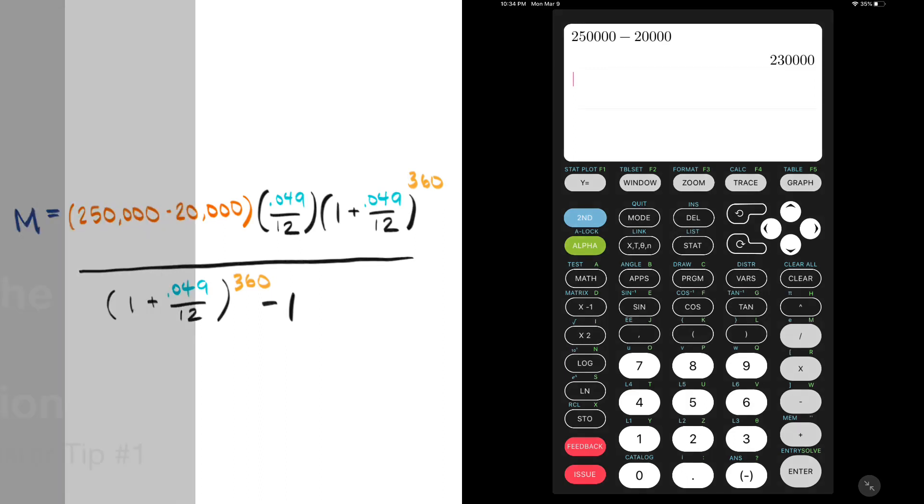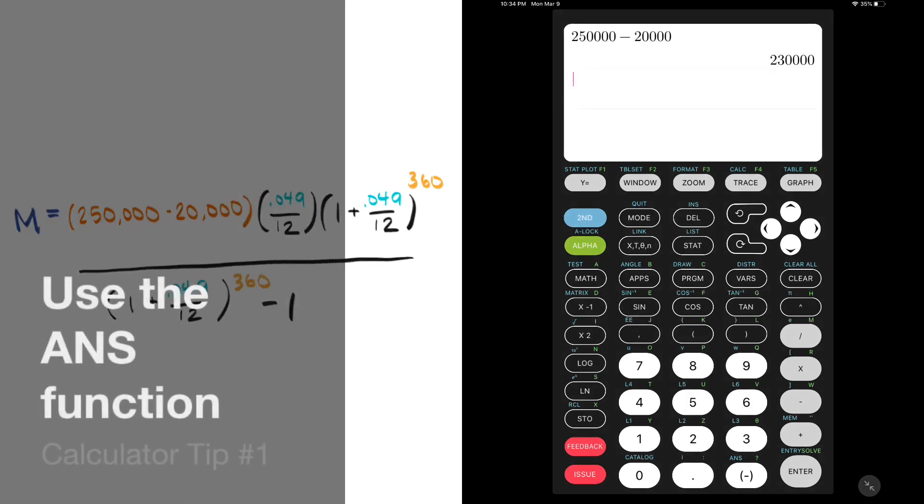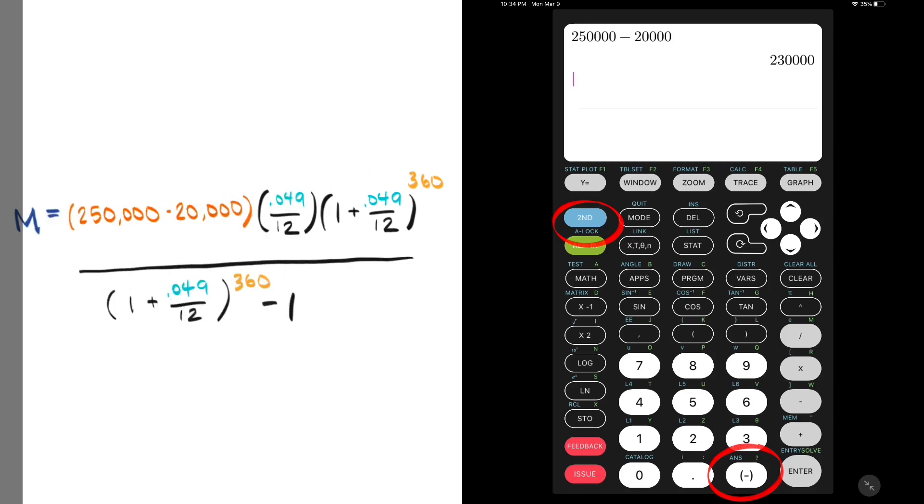Here's calculator tip number one: use the answer function. That means that whatever answer I got in the most recent calculation will be applied to whatever upcoming calculation I want, so I don't have to retype or round any decimals. I can do this by clicking the ans button, which I see is in text above another button, so I need to first click the second button, also sometimes labeled the shift button, and then the ans button.